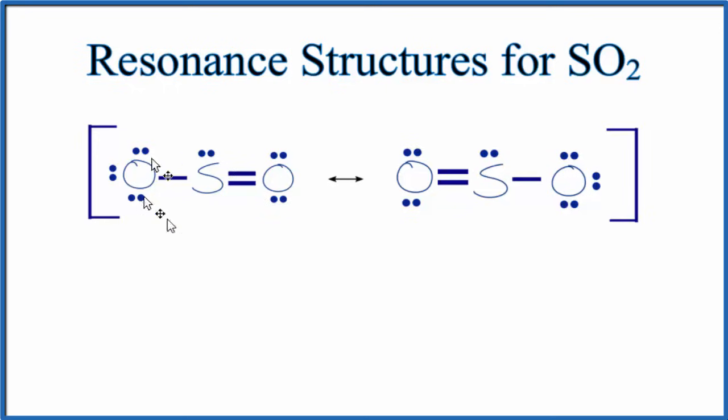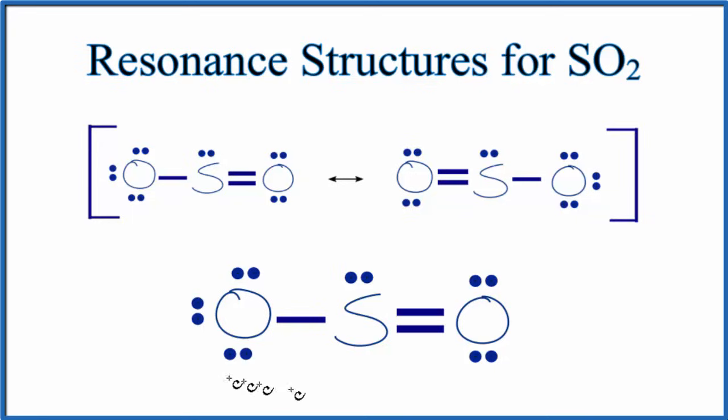But there's a bit of a problem with these Lewis structures. Let's take a look at that. So if we look at the formal charges for this Lewis structure of SO2, we would have formal charges of a minus one, a plus one, and then a zero. And when we're doing Lewis structures, we like these to be as close to zero as possible. So we can actually change this structure so that all of the formal charges are zero.